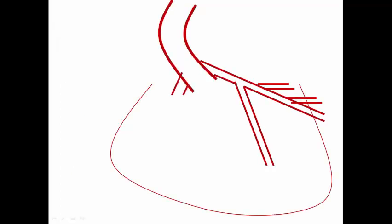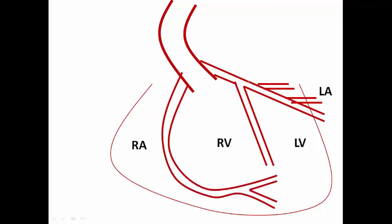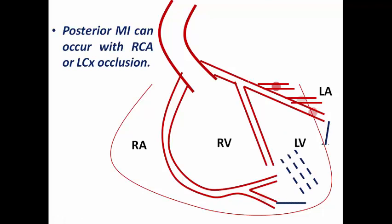The culprit vessels in posterior MI can be seen in this diagram showing the anatomy of the RCA, left main, LAD, and LCX. A thrombus may occlude the posterior descending artery arising from the RCA, which is dominant in about 80% of cases. Sometimes it occludes the OM branch — OM1, OM2 — or the LCX itself. These vessels supply the posterior wall of the heart, so the culprit vessel in most cases of posterior MI is the RCA or LCX occlusion.